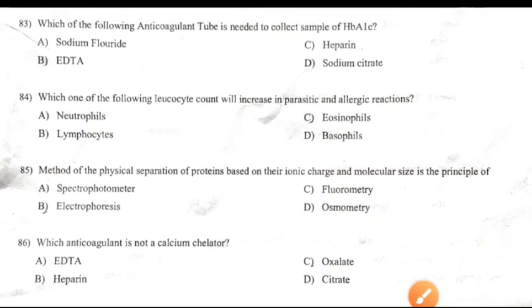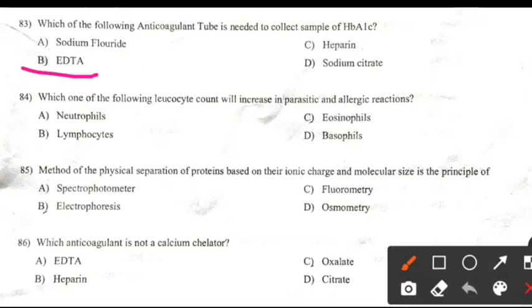Which of the following anticoagulant tube is needed to collect a sample for HbA1c? Right answer B: EDTA.